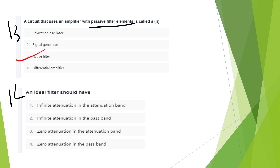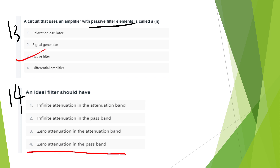An ideal filter should have zero attenuation in the pass band.